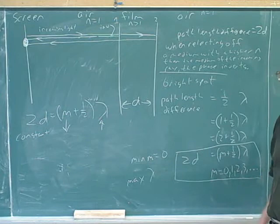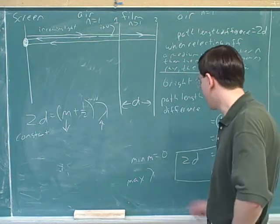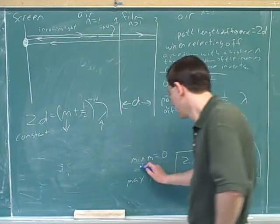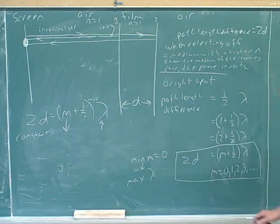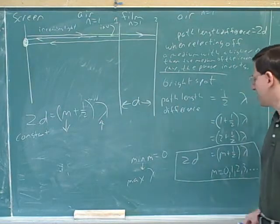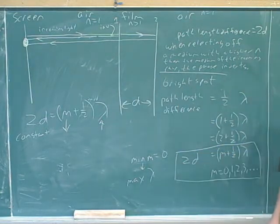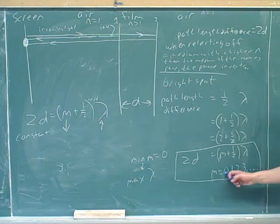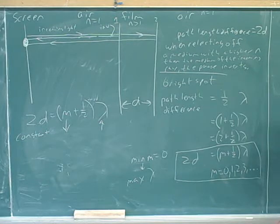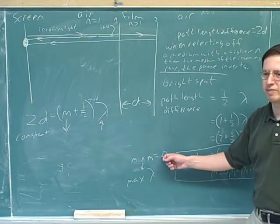To find the maximum wavelength where we get a bright spot, you plug in m equals zero and solve algebraically. To solve these problems, first get the right equation by taking into account the inversions, then decide what m to plug in. This would correspond to zeroth order, first order, second order, and third order. Very often they don't say zeroth order — they just ask for the maximum wavelength, which tells us the minimum m is zero.